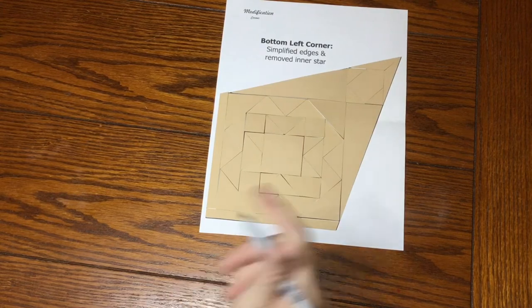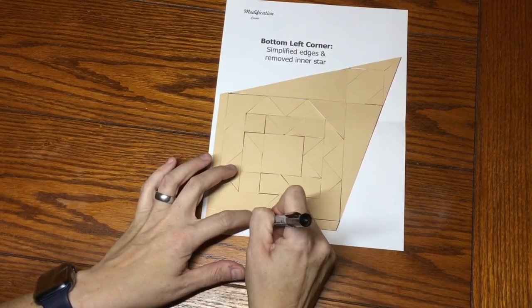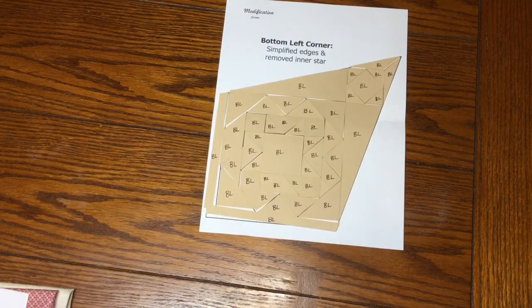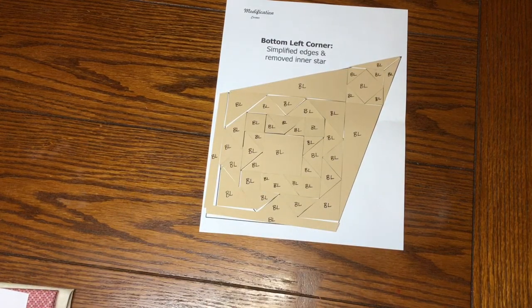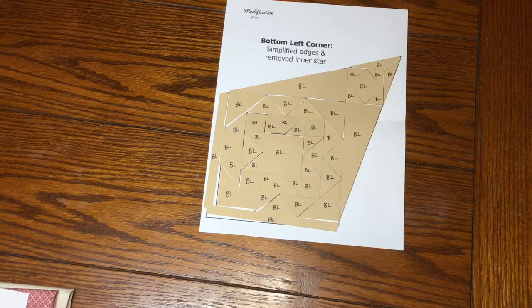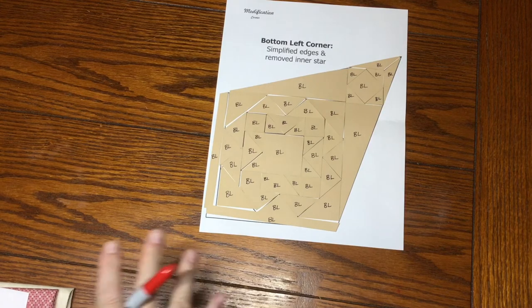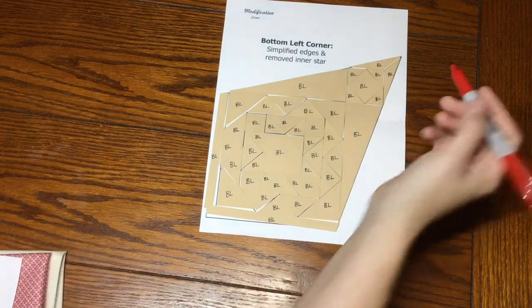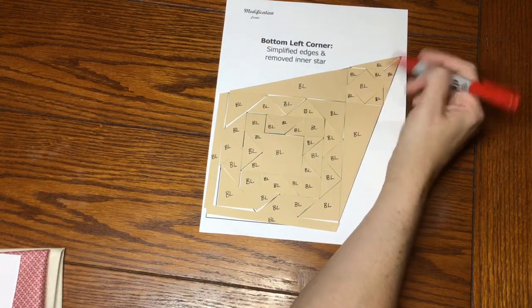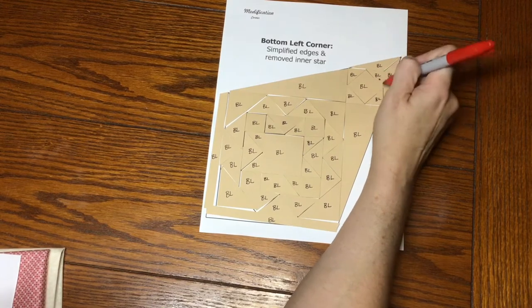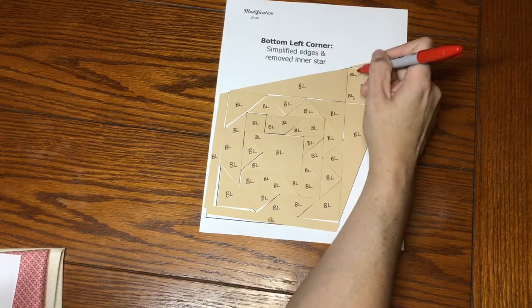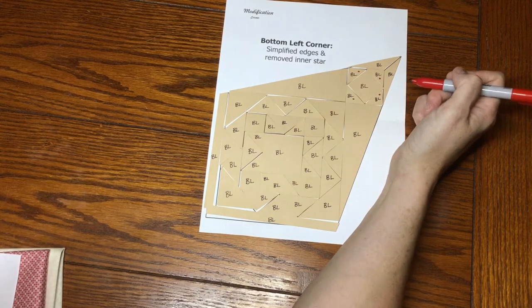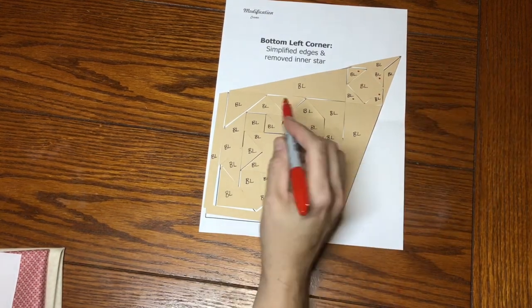So I've got my pieces all laid out, and I will label these BL for the bottom left. Now it's time to mark my focus fabric. You can kind of do what you want to do. I'm trying to stick with the original sort of. They took out this center star. But here, this is background color on the original. So we're going to do these as focus fabric because it's a two color. And so this is background.